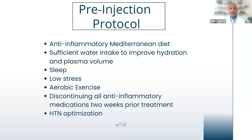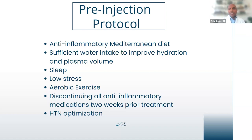A week before the procedure, I have patients do some type of aerobic activity as tolerated — anywhere from 30 minutes to an hour daily leading up to the blood draw. This can include walking, hiking, or a stationary bike. This can reduce cortisol, help manage blood pressure, and promote a healthier state of being. I have patients discontinue all NSAID medications two weeks prior to treatment, since most NSAIDs have an adverse effect on platelets. Hypertension optimization and glucose optimization are also key — sometimes I'll work with the primary care specialist to adjust medications.